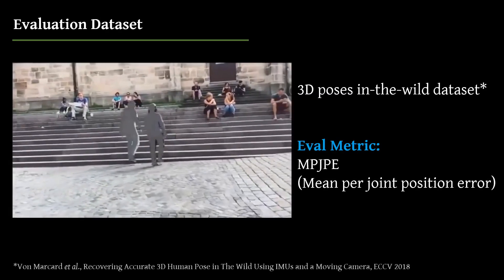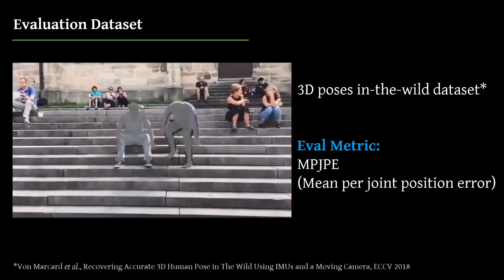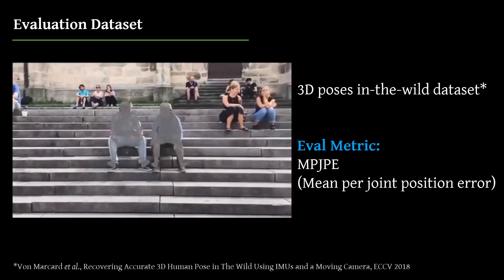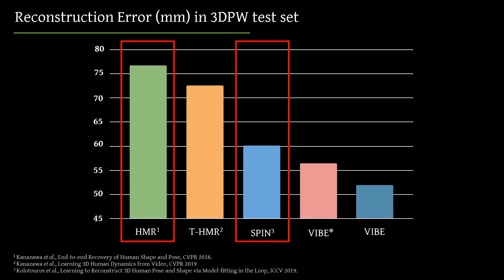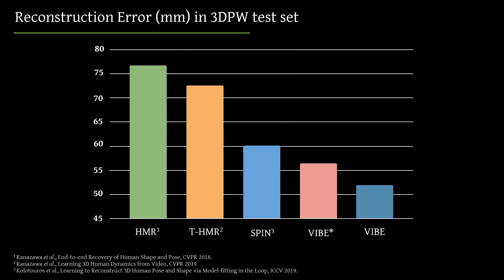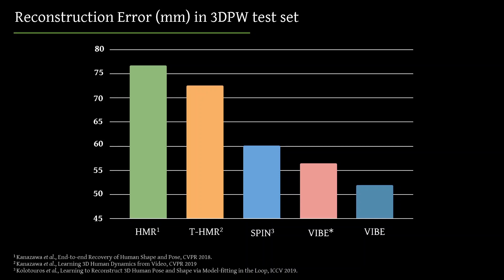For evaluation, we use the challenging 3DPW dataset because it contains in-the-wild sequences with reference 3D pose and shape data. We report the 3D distance between ground truth and predicted joints in millimeters. This chart shows the reconstruction errors of recent state-of-the-art methods on the 3DPW dataset. HMR and SPIN are frame-based methods, whereas TemporalHMR and our VIBE method use video sequences. VIBE* uses the same datasets as others during training, while VIBE benefits from additional 3DPW training data. VIBE reduces reconstruction error relative to the state-of-the-art by a significant margin and outperforms both video and frame-based methods.